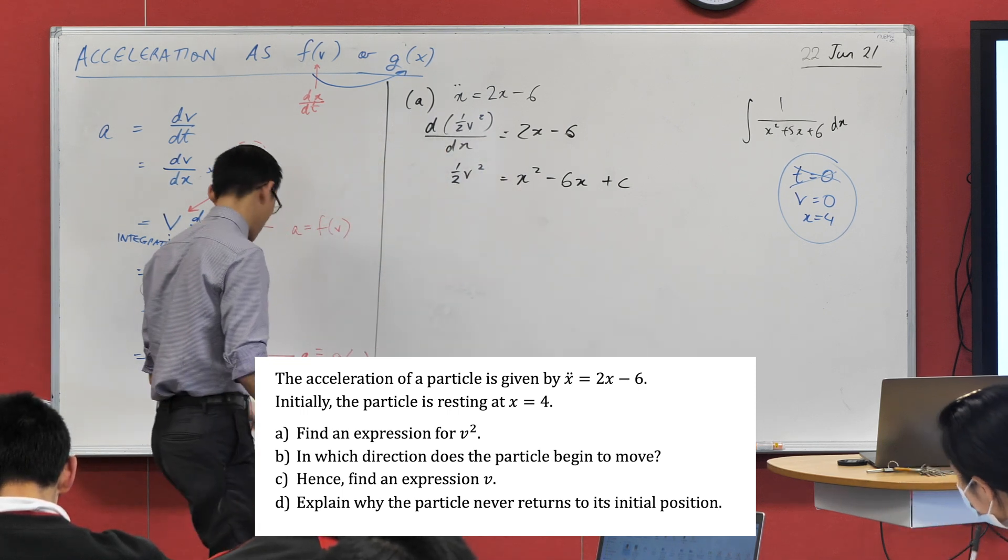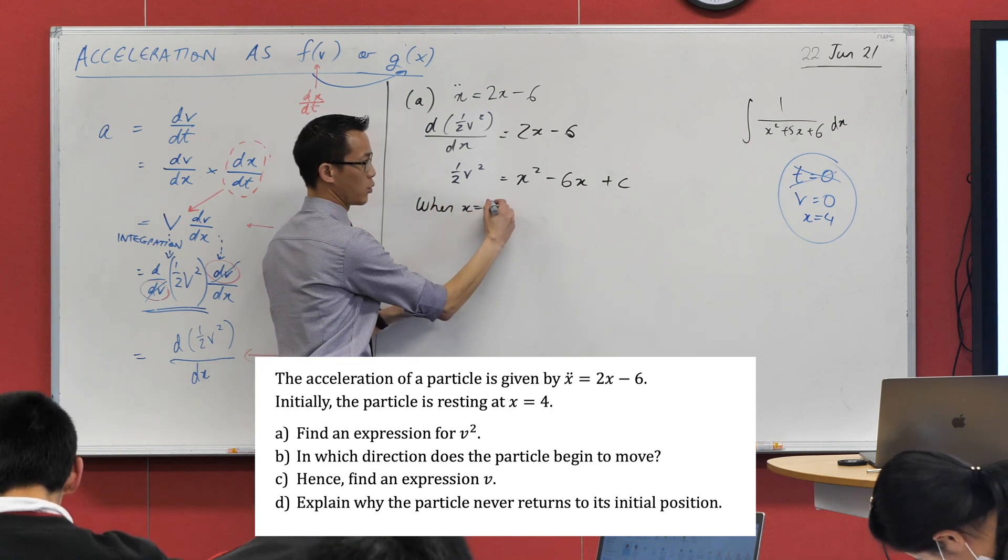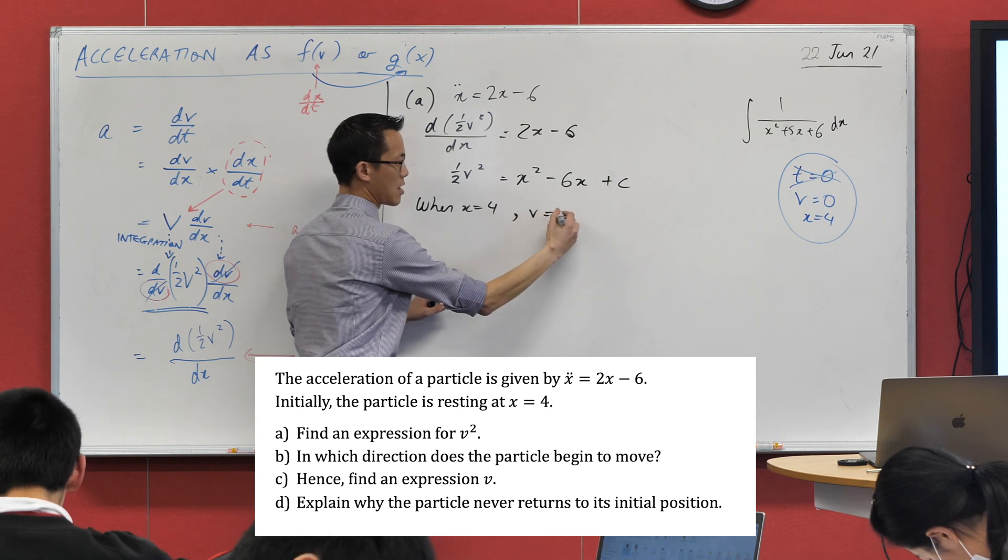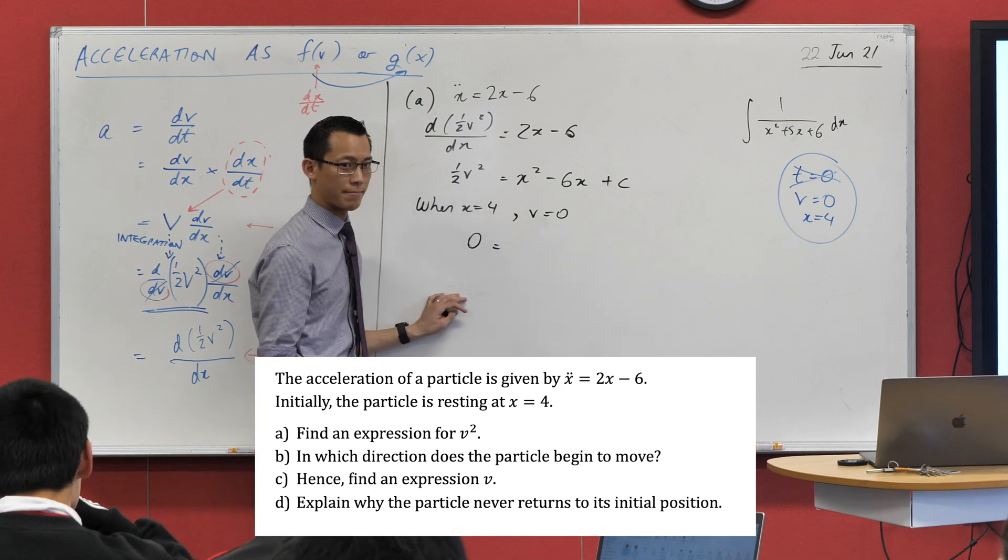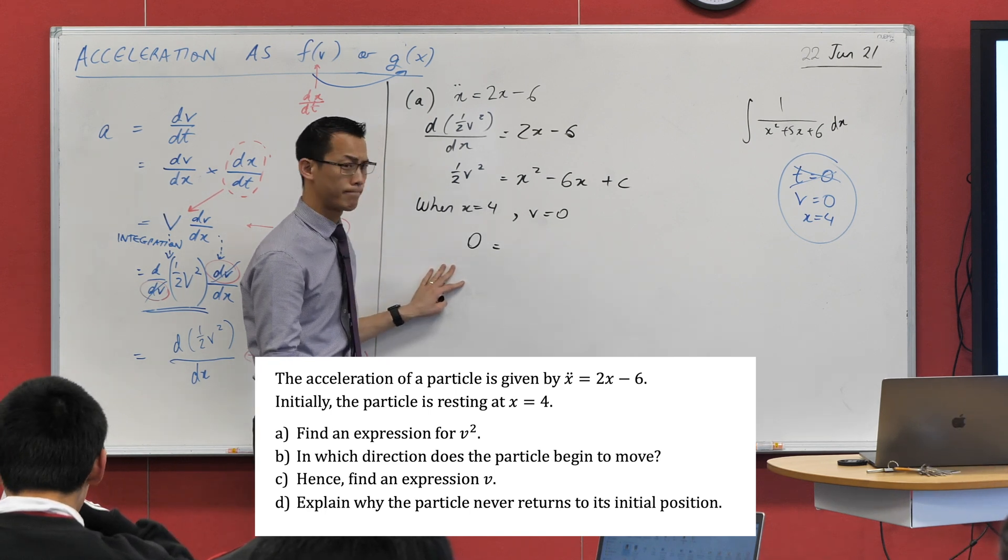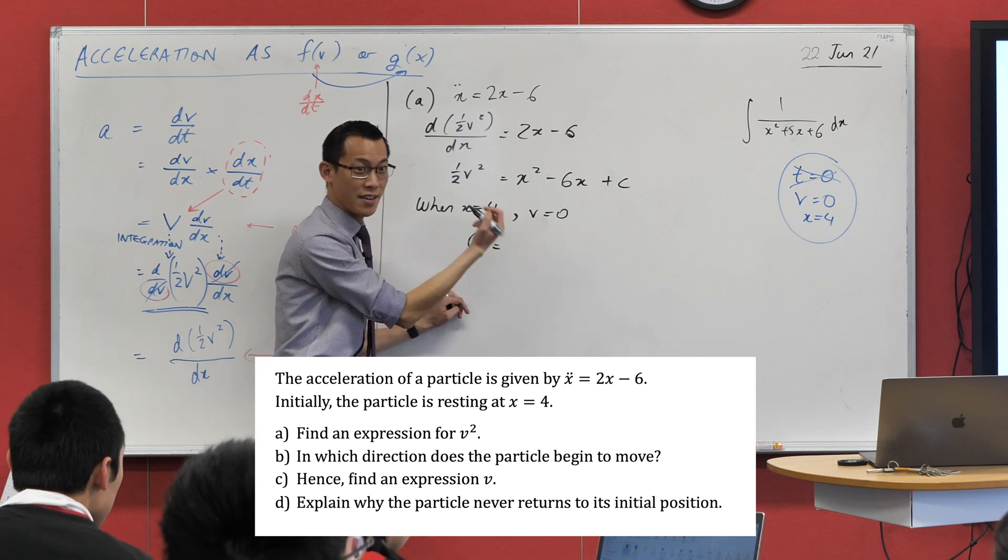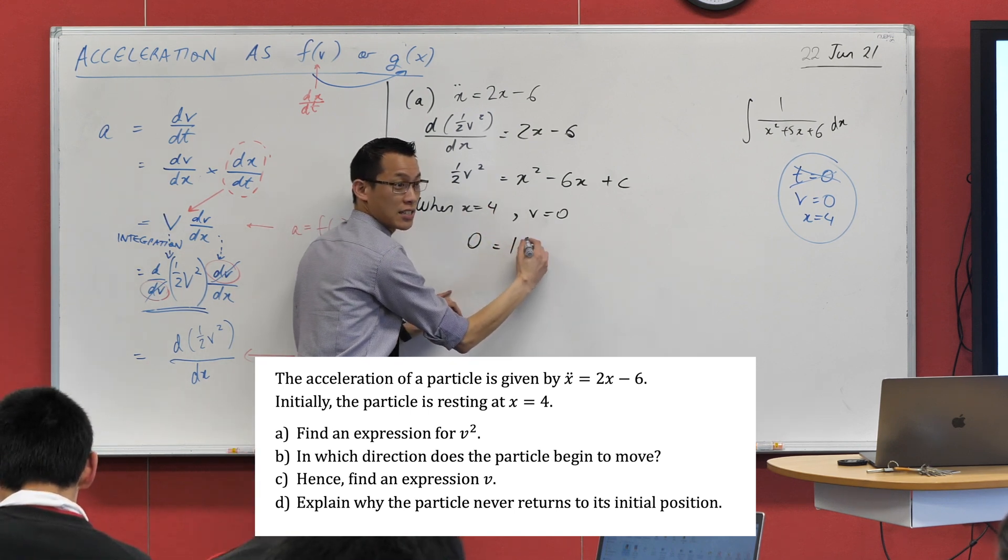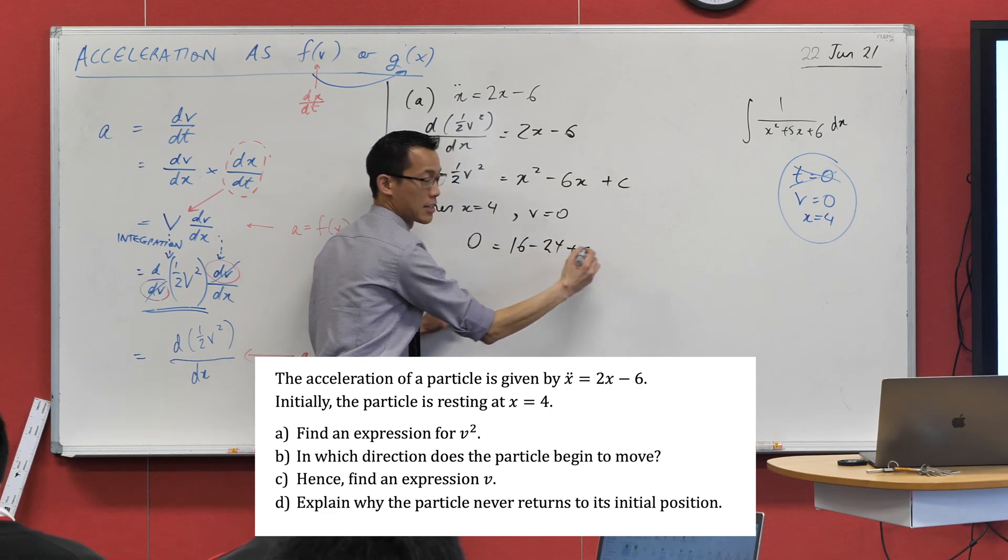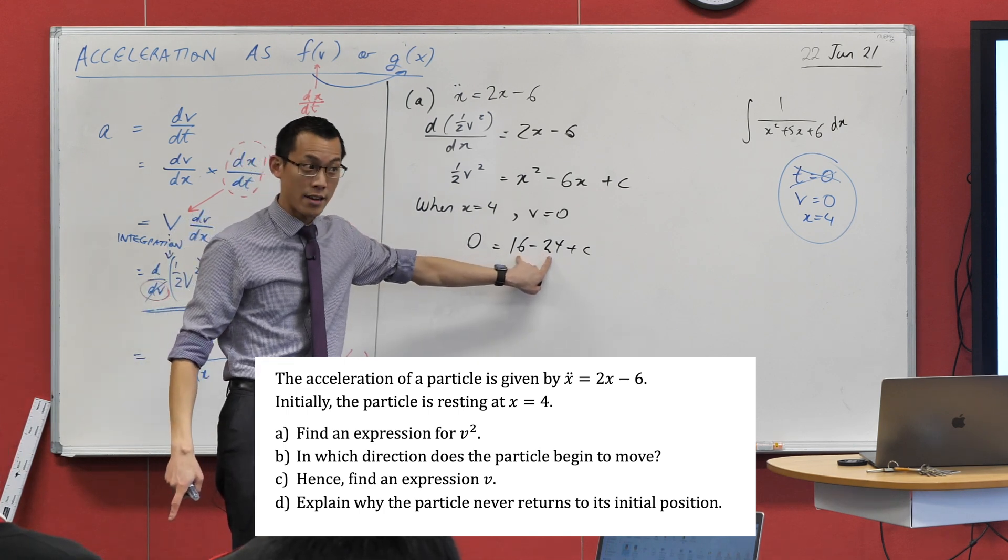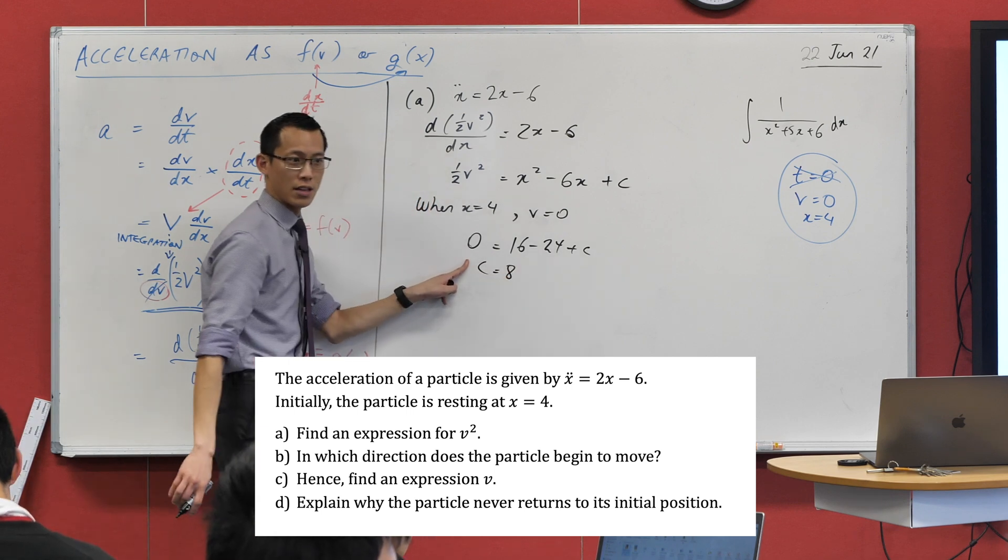When I substitute in x equals four, v equals zero, I can then go straight to the left-hand side. I've got a zero over there. What do I get on the right? Let's just do the substitution step, shall we? Got x equals four, so I'm getting a 16 minus 24 plus my constant. That gives us, as Calvin said, negative eight right there. So you can add that to both sides. That gives you a constant.